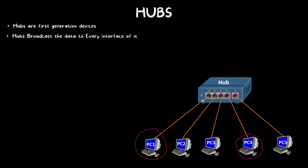The broadcast data is received by PC2, PC3, PC4, and PC5. PC2, PC3, and PC5 reject the data because they are not the destination device. Only PC4 is the destination, so only PC4 receives the data. The remaining computers reject the data.